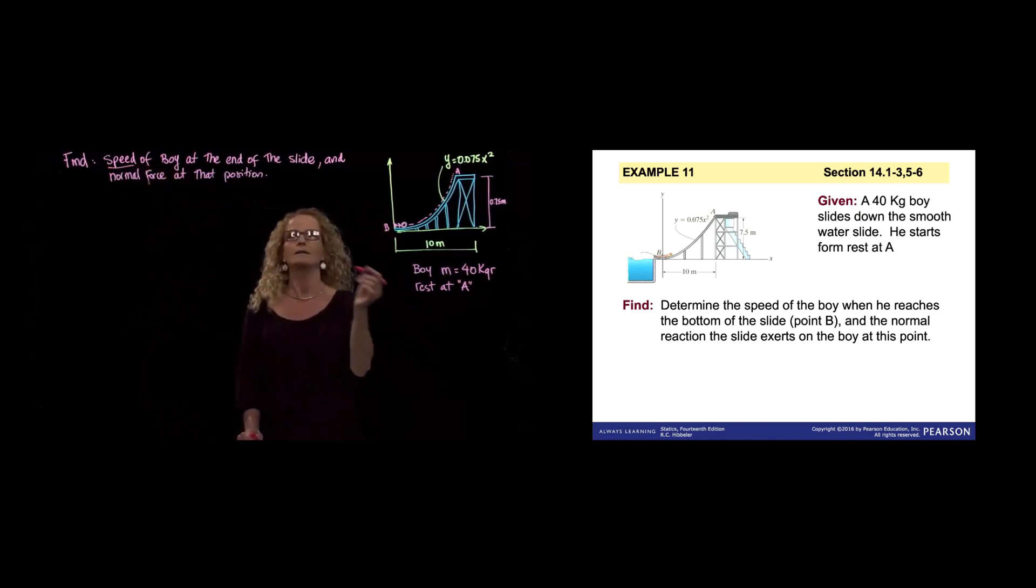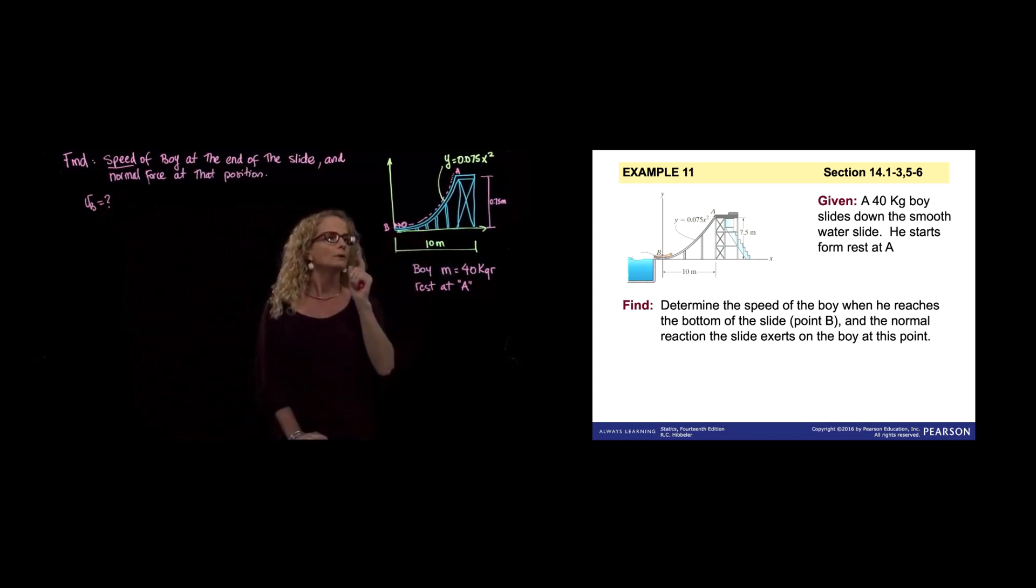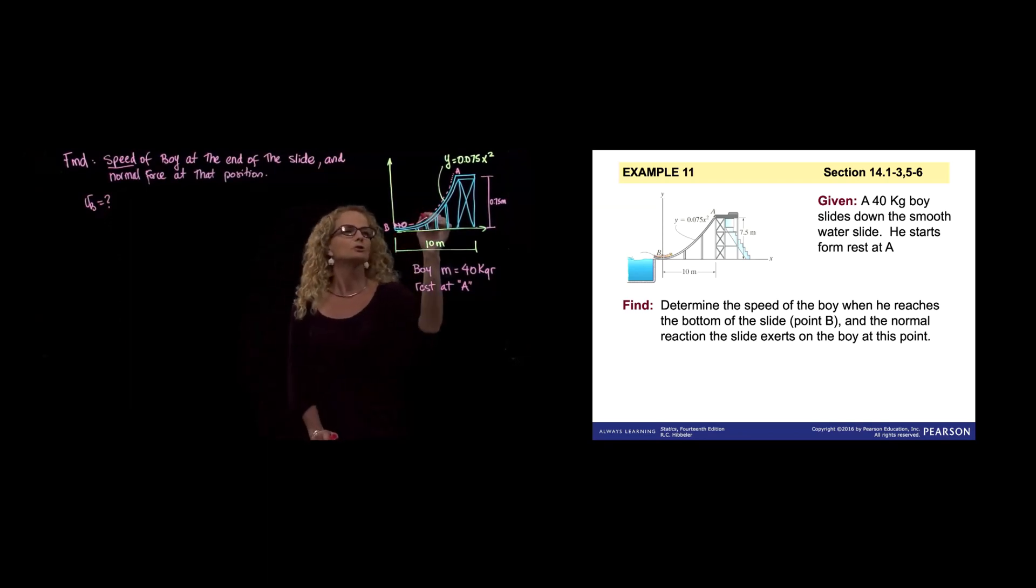And they want us to find the speed at the end. So they want us to find the speed, which is speed of B. And one important thing that they say also, that the slide is smooth.